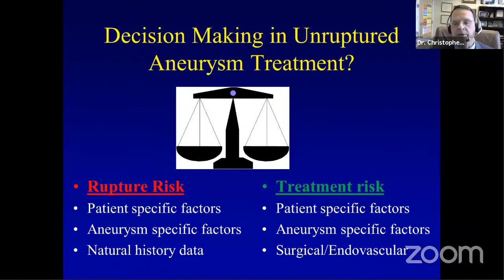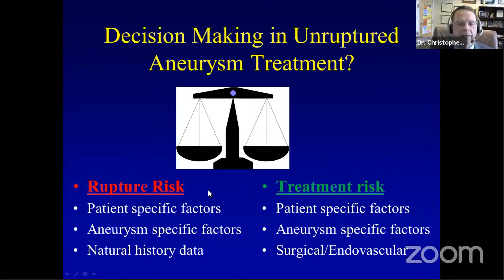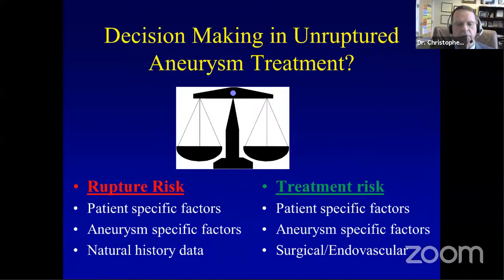We're left encountering the patient with an unruptured aneurysm and trying to decide whether to leave it alone or fix it, and then how to fix it. This is really almost always a balance between the rupture risk of that aneurysm in that individual and the treatment risk. The rupture risk involves patient-specific factors which can modify risk — increase or decrease it — as well as aneurysm-specific factors such as morphologic and location features.